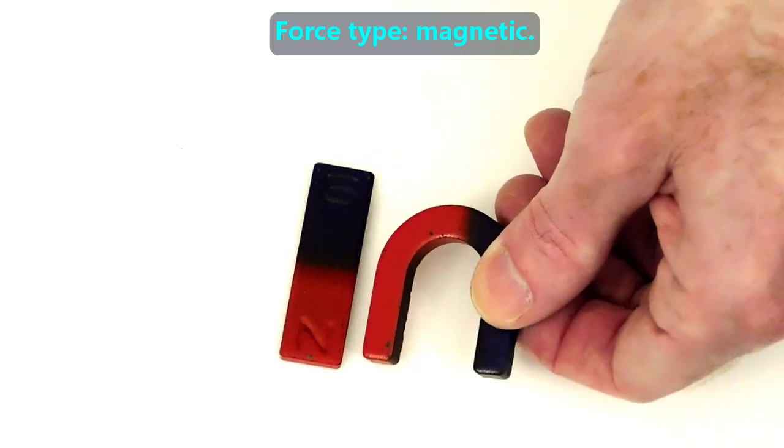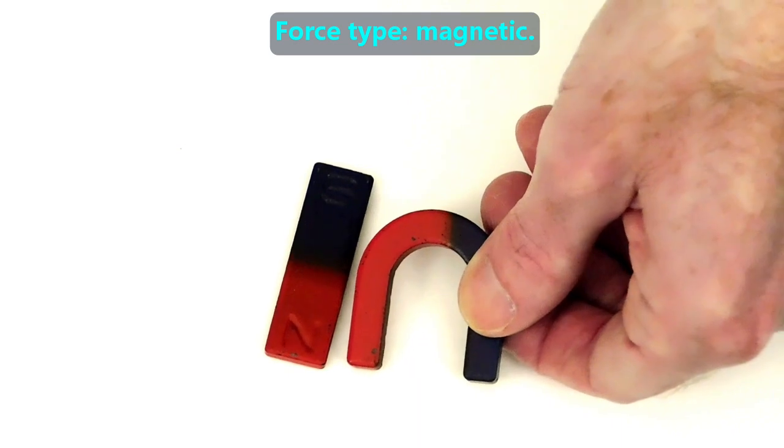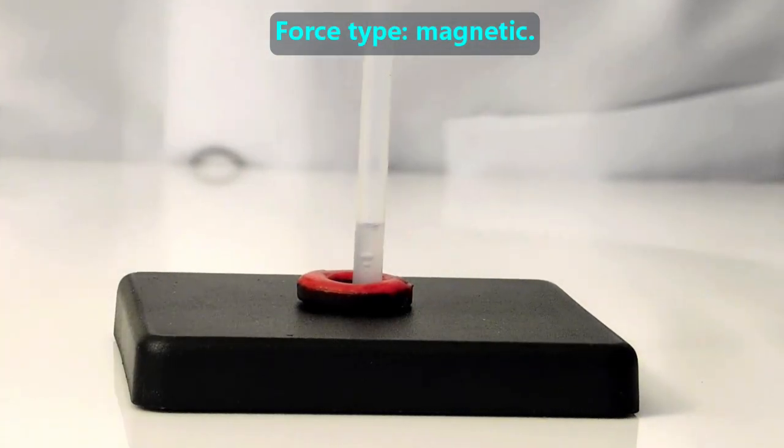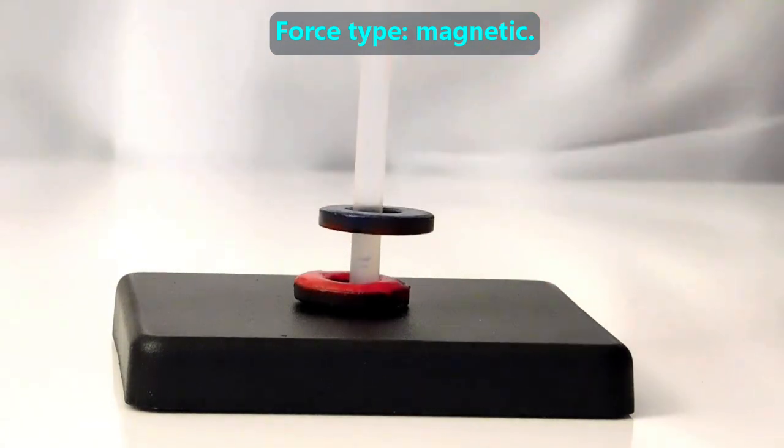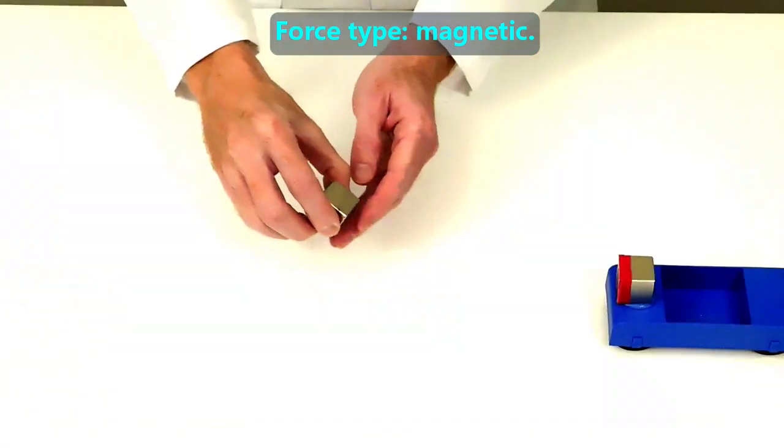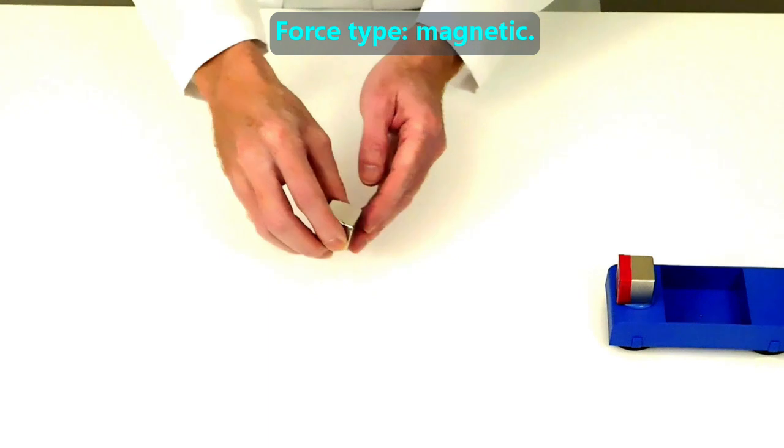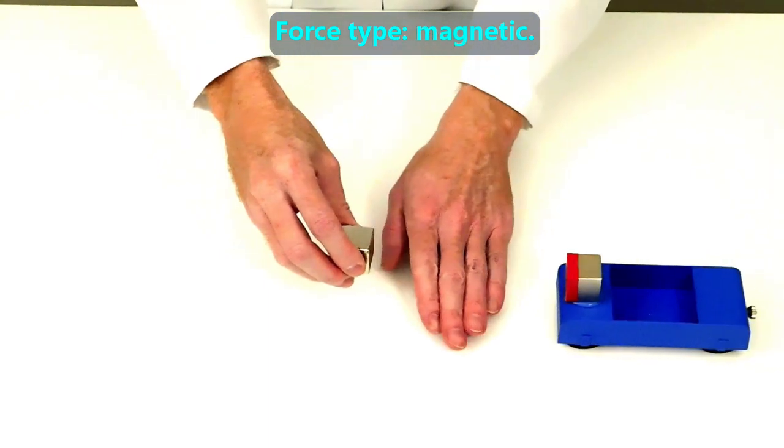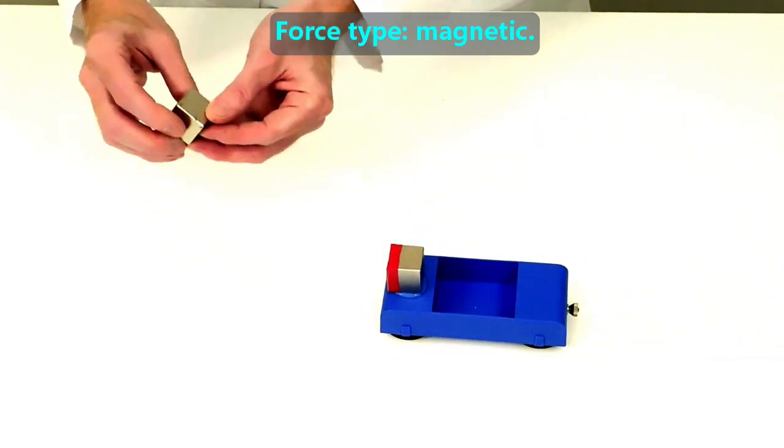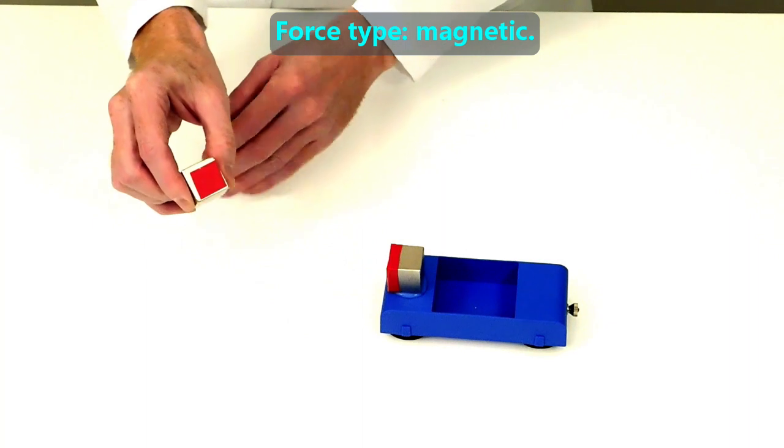Magnets pull each other closer when their opposite poles are facing each other. But magnets will push each other away if their same poles are facing each other. If we stack them with their same poles facing each other, then we can even cause one to levitate over the other. To demonstrate their push and pull more clearly, we mounted one magnet on a cart. Here the opposite poles are facing so they pull each other. Here the same poles are facing so they push each other.